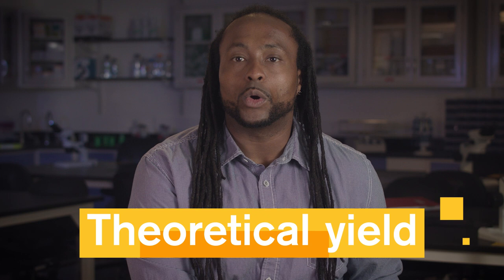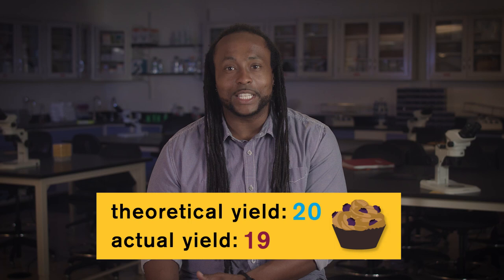The amount that's really produced is called the actual yield. In this case, our theoretical yield of muffins is 20. Our actual yield, if Stella steals one, would then be 19.